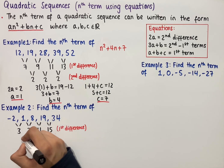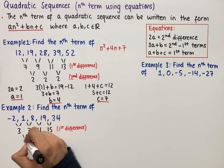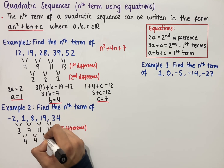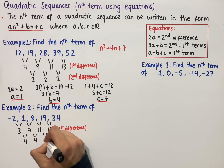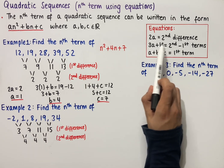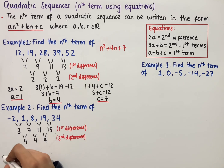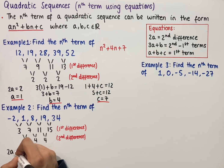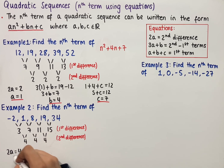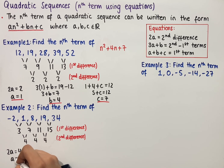Then work out the second difference: 7 minus 3 which is 4, 11 minus 7 which is 4, and 15 minus 11 which is 4. And so using our first equation we have that 2a equals the second difference, which in this case is 4. And so solving for a we get a equals 2.